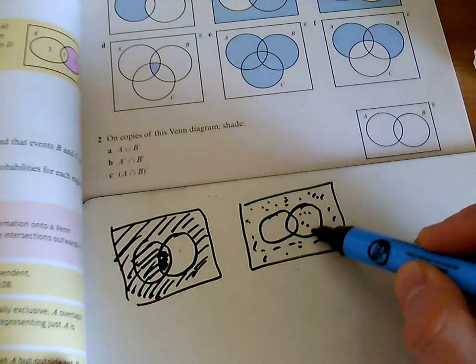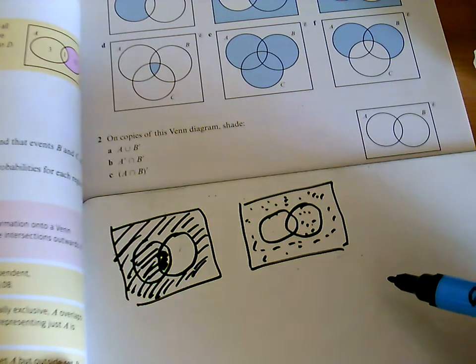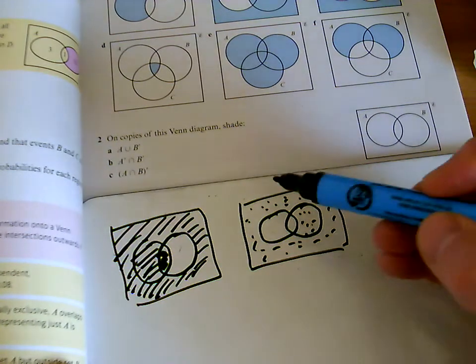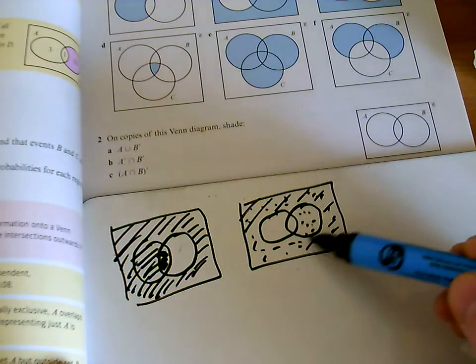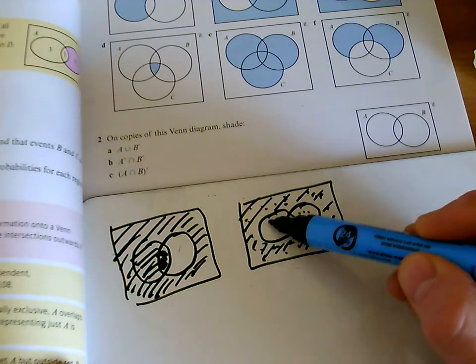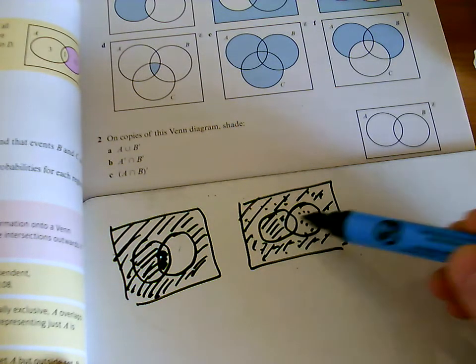That's not in A. So there you go, there's everything that's not in A. And now everything that's not in B. So this is not in B. This is not in B. This bit here is not in B as well. But that is.